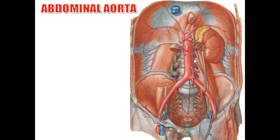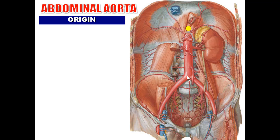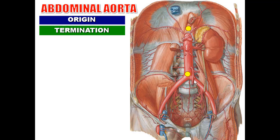Starting with the Abdominal Aorta — you should know three facts: the origin, termination, and branches. Regarding the origin, it is the continuation of the thoracic aorta opposite T12, behind the median arcuate ligament of the diaphragm. Regarding termination, it terminates by dividing into two common iliac arteries opposite L4 in the intercristal plane.